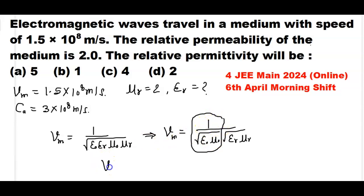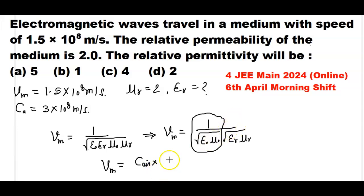The speed of light in the medium equals the speed of light in air divided by √(εr × μr). Substituting the known values, the speed of light in the medium is equal to c / √(εr × μr).